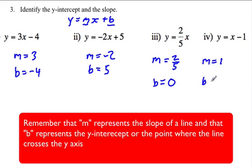And our b is equal to negative 1. So that means our slope is 1 and our y-intercept is negative 1.